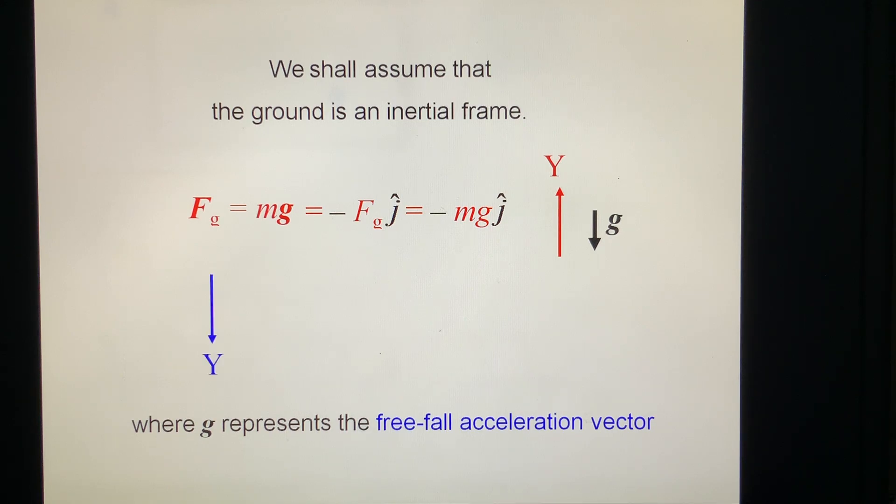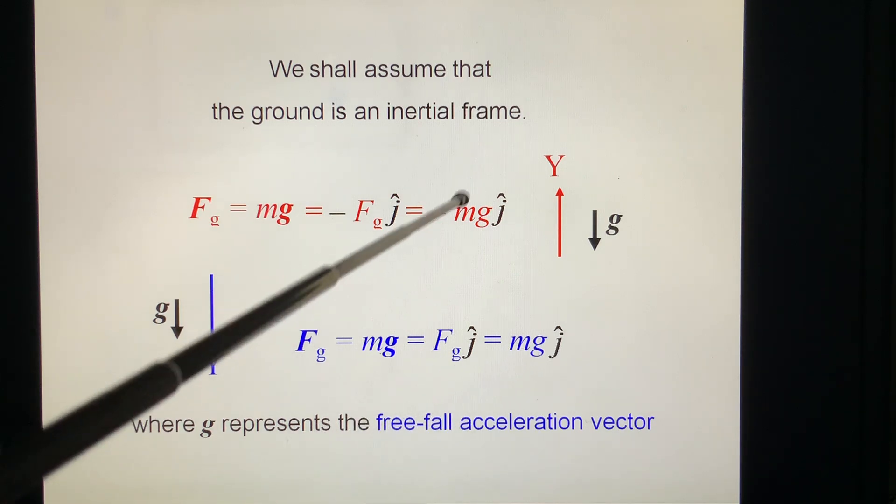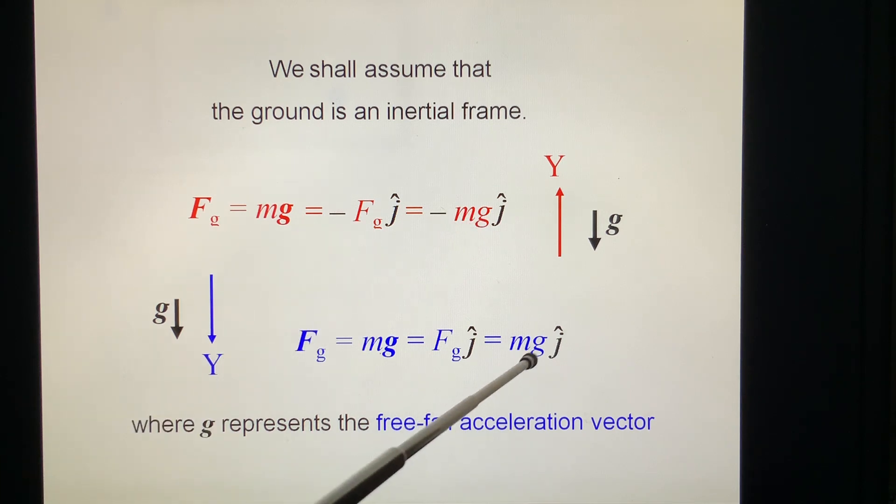If you like to choose reference y positive downward, then g is downward positive number. So the first term is the same, Fg equals mg. But in this case, we choose the reference direction. We can write it, g is a positive number, so it is equal to Fg j, and Fg is mg. So this one is minus mg, this one is mg.